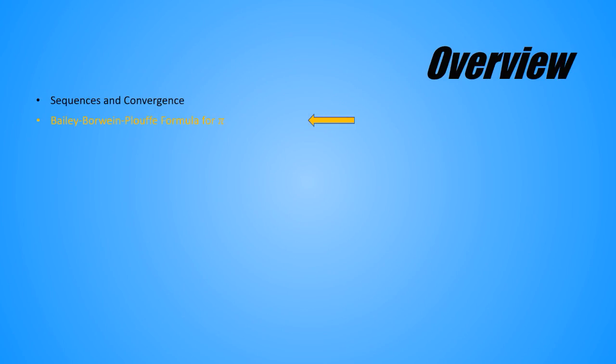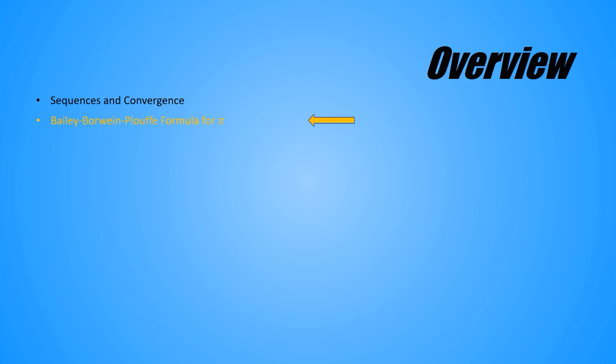In this segment, we'll look at the Bailey-Borwein-Plouffe formula for pi, which I'm going to call the BBP formula. It's a lightning-fast algorithm that gets us digits of pi very quickly. The BBP formula was developed in 1995 by David Bailey, Peter Borwein, and Simon Plouffe. And here's the formula, which I'll state without proof. It expresses pi as an infinite sum. The terms in the sum are a combination of fractions.